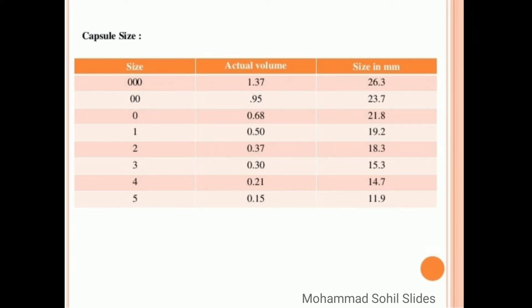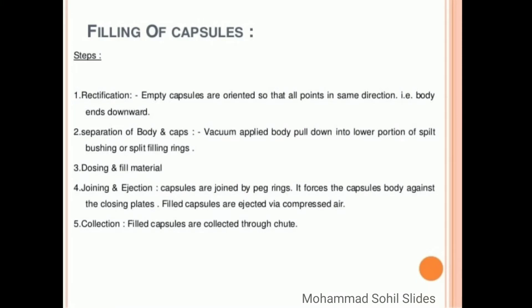Now what is the step required for the filling of capsule? First is rectification: empty capsules are oriented so that all point in same direction, that is body ends downward. Then second, separation of body and caps: vacuum applied, body pulled down into lower portion of split bushing and split filling rings.